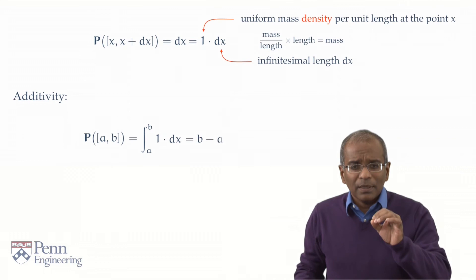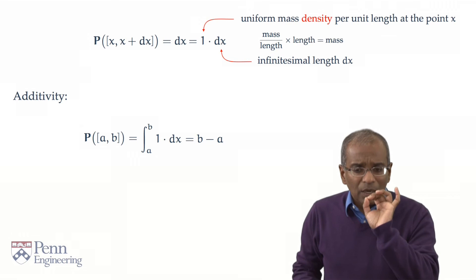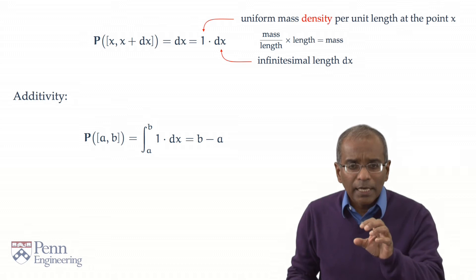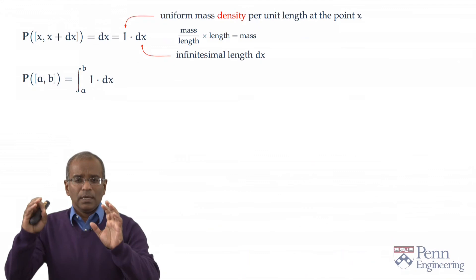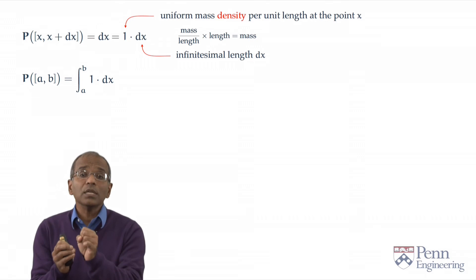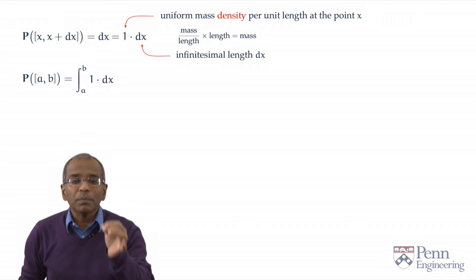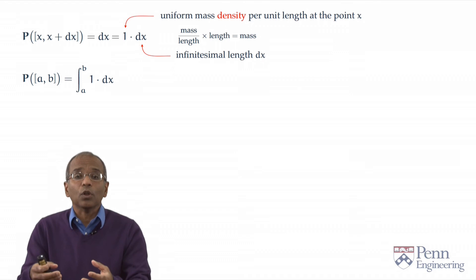But this is a potent understanding. What we have done is represented an interval probability as an integral, as an area under a curve. Let's promptly consolidate this understanding. So, here again, an infinitesimal interval of length dx has got probability 1 times dx. Identify 1 as a uniform density per unit length. The probability of the interval is then the integral of 1 times dx over this interval.